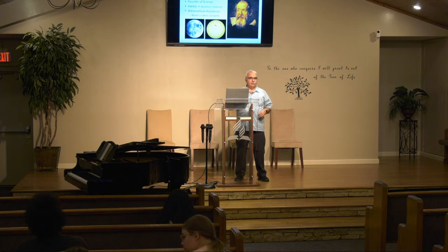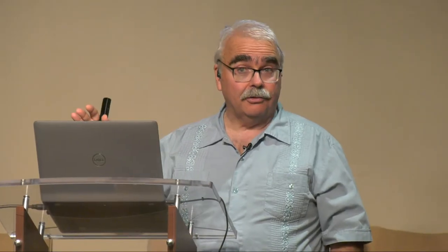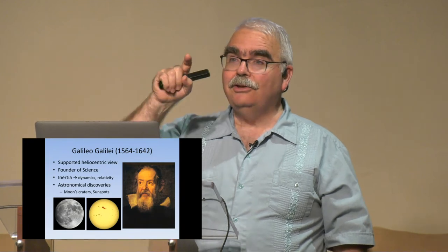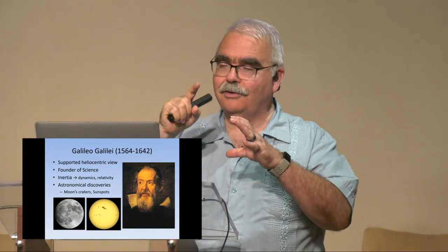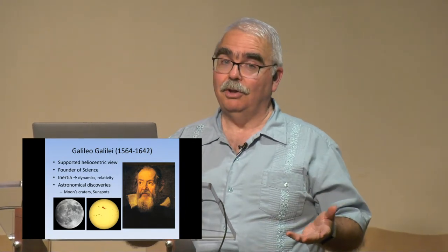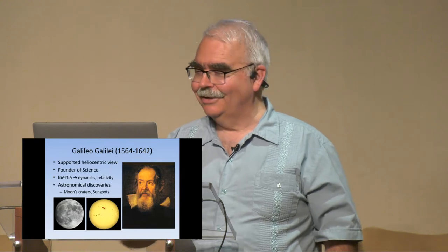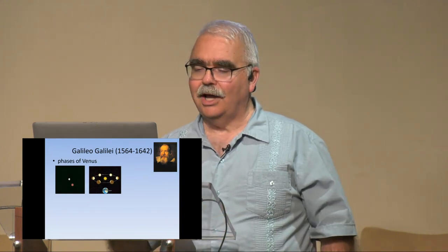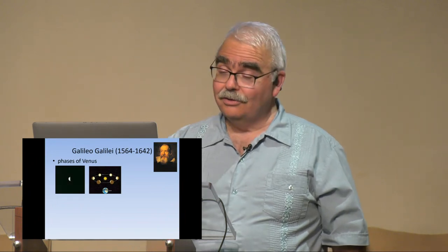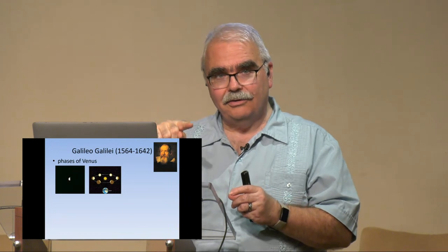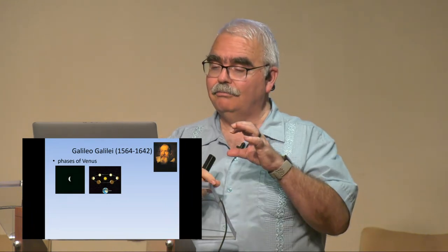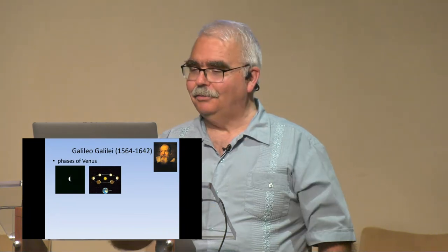Galileo trained his telescope on the heavens and was the first to discover so many things. He was the first to see that the moon has craters, that the sun is not a perfect sphere of light — it has sunspots. He drew pictures of the sunspots moving across the sun, which blew minds and they didn't like it. He also saw the phases of Venus — through a telescope it looks sort of like the moon at different times of the month.